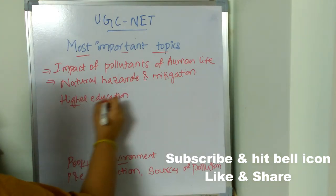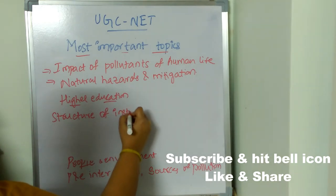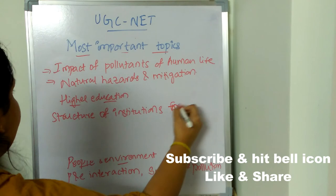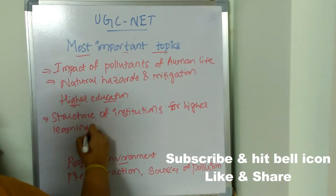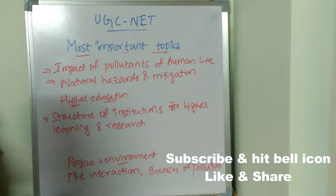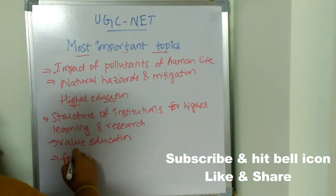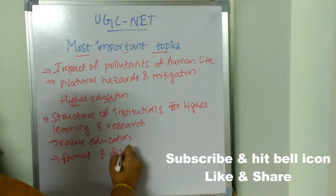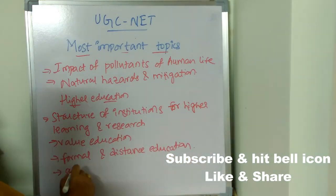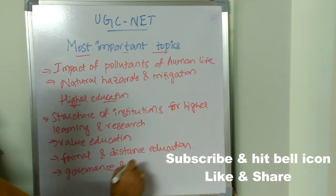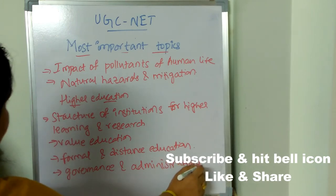Coming to higher education: structure of institutions for higher learning and research is very important. Formal education and distance education — this topic is also very very important. Governance and administration are also key topics. These are the most important topics coming to Paper 1.